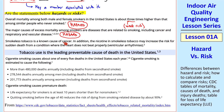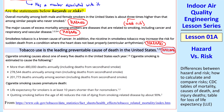Smokeless tobacco is a known cause of cancer, and they talk about nicotine, etc. Again, there are no numbers, so that would be a hazard. The statement that tobacco use is the leading preventable cause of death — again, no numbers, so it's a hazard. But this one: cigarette smoking causes about one in every five deaths. You can calculate a probability from this statement if you knew how many total deaths there were, so I would call this statement a risk.